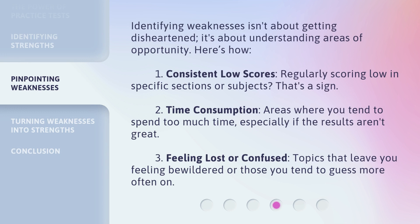Identifying weaknesses isn't about getting disheartened — it's about understanding areas of opportunity. Here's how. First, consistent low scores: regularly scoring low in specific sections or subjects — that's a sign. Second, time consumption: areas where you tend to spend too much time, especially if the results aren't great. Third, feeling lost or confused: topics that leave you feeling bewildered or those you tend to guess more often on.